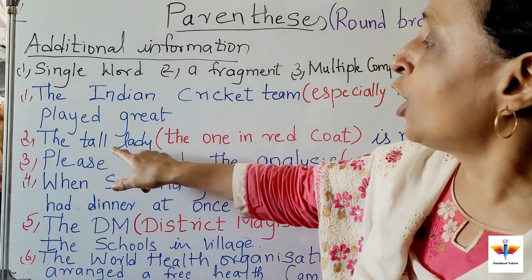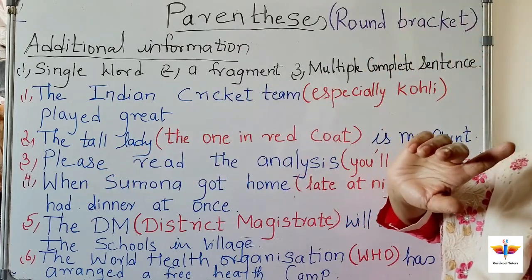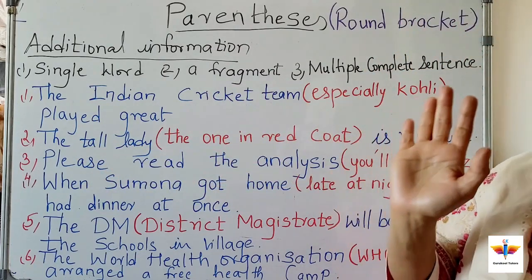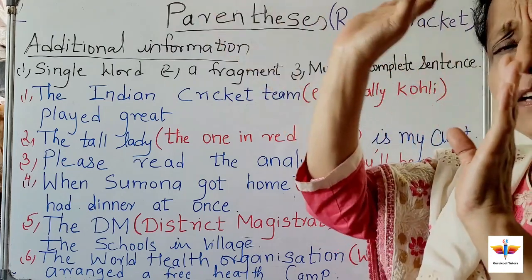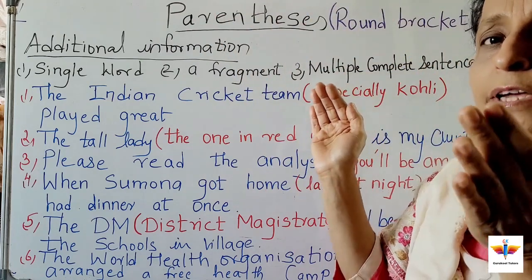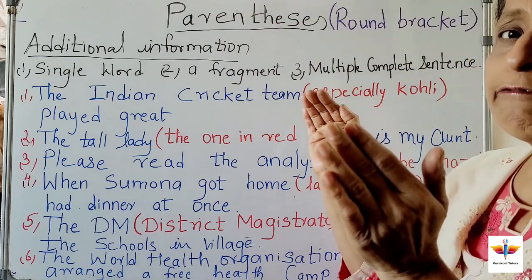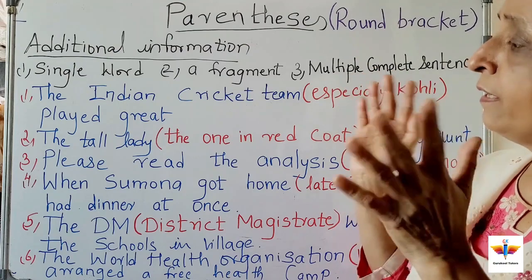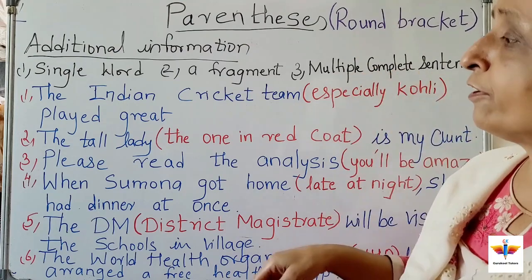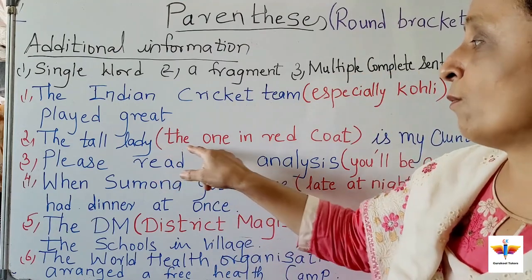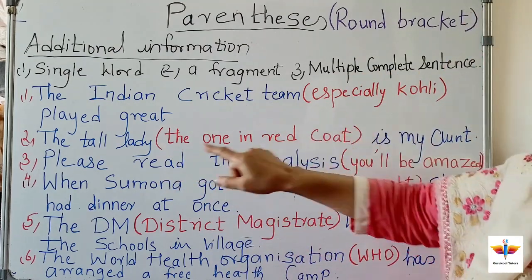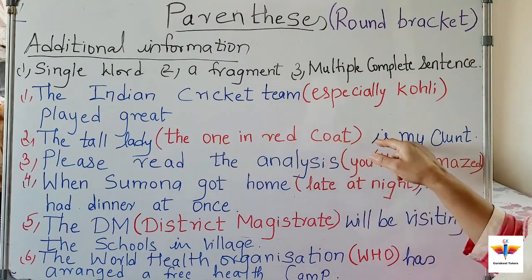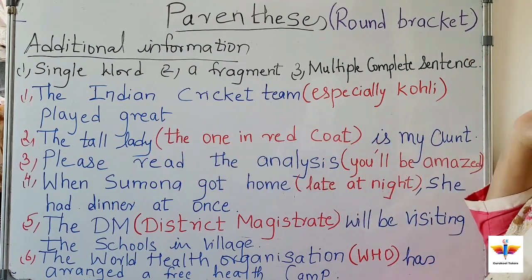'The tall lady is my aunt' is a complete sentence. But I want to give some extra information to make sure we are referring to the same lady. So I add 'the one in red coat' in brackets: 'The tall lady, (the one in red coat), is my aunt.' That extra detail goes inside the round bracket as parenthesis.